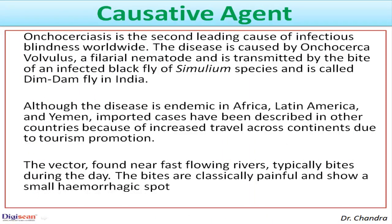Onchocerciasis is the second leading cause of infectious blindness worldwide. The disease is caused by Onchocerca volvulus, a filarial nematode, and is transmitted by the bite of an infected black fly of the Simulium species, called the Dim-Dam fly in India. Although the disease is endemic in Africa, Latin America, and Yemen, imported cases have been described in other countries due to increased intercontinental travel. The vector is found near fast-flowing rivers and typically bites during the day.